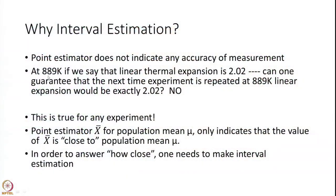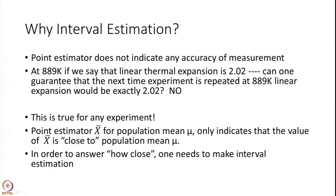Why do we need an interval estimator? If at 889 Kelvin we say the thermal expansion is 2.02 — that is what we got from one experiment — can we guarantee someone else's experiment gives exactly 2.02? No. A point estimator such as the sample mean only indicates that the sample mean is close to the population mean. It gives an idea of where the population mean lies, but questions about how close it is and what values the population mean can take are answered through the interval estimator.